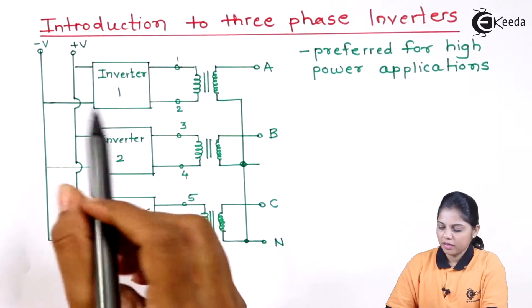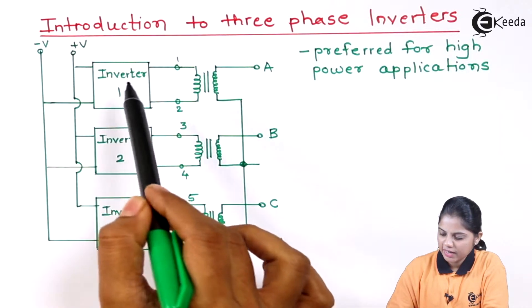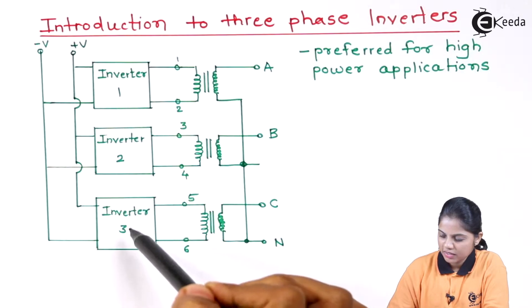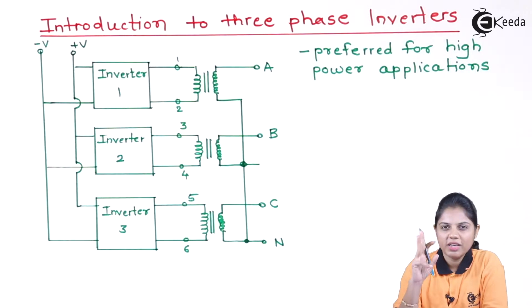Let's have a look over the diagram. So here you can see the diagram where three inverters are connected. This is a three-phase.